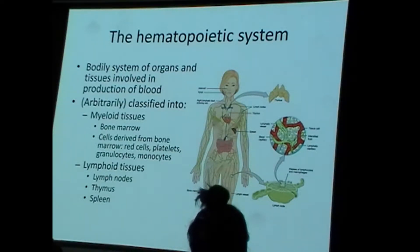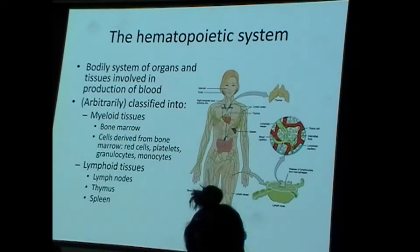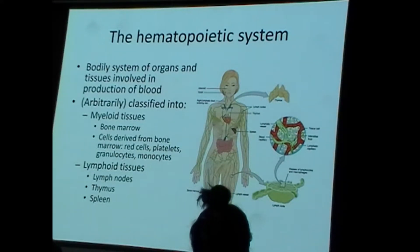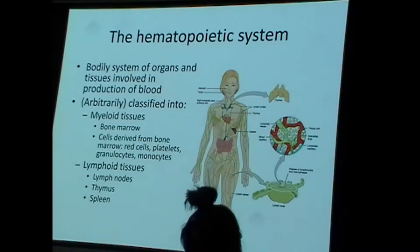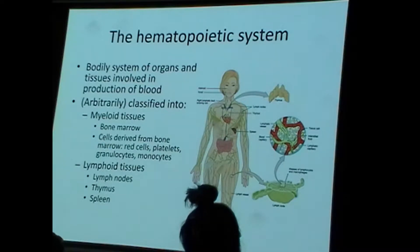Somewhat arbitrarily, we divide the hematopoietic system — and specifically the organs involved in blood production — into myeloid tissues and lymphoid tissues. The myeloid tissues are the bone marrow and all cells derived from it. The lymphoid tissues are the lymph nodes, the spleen, and the thymus.